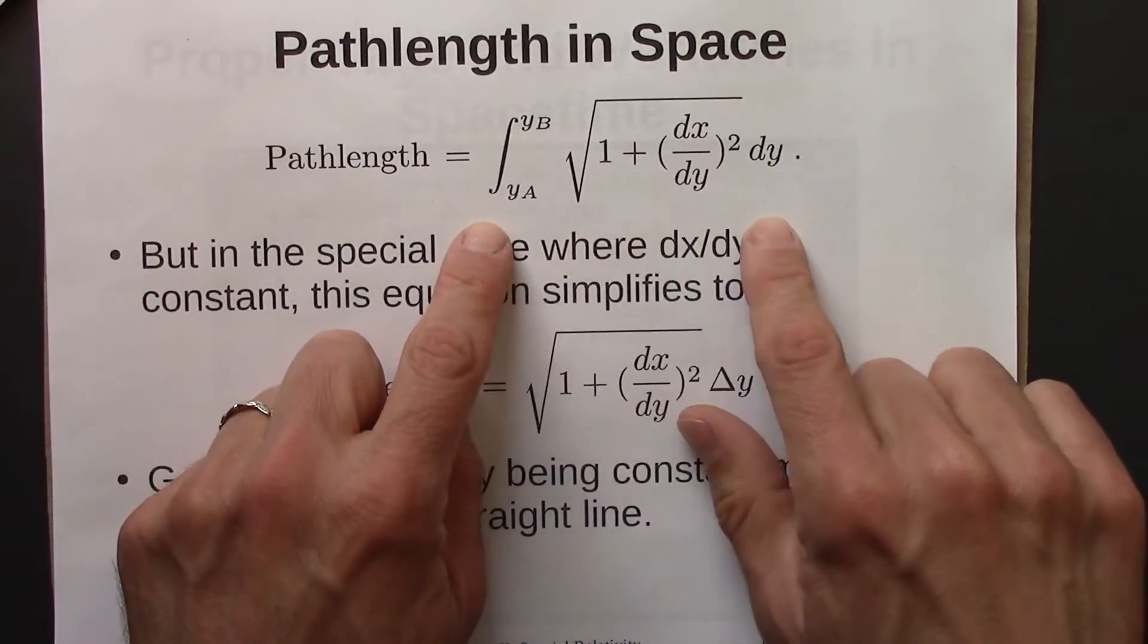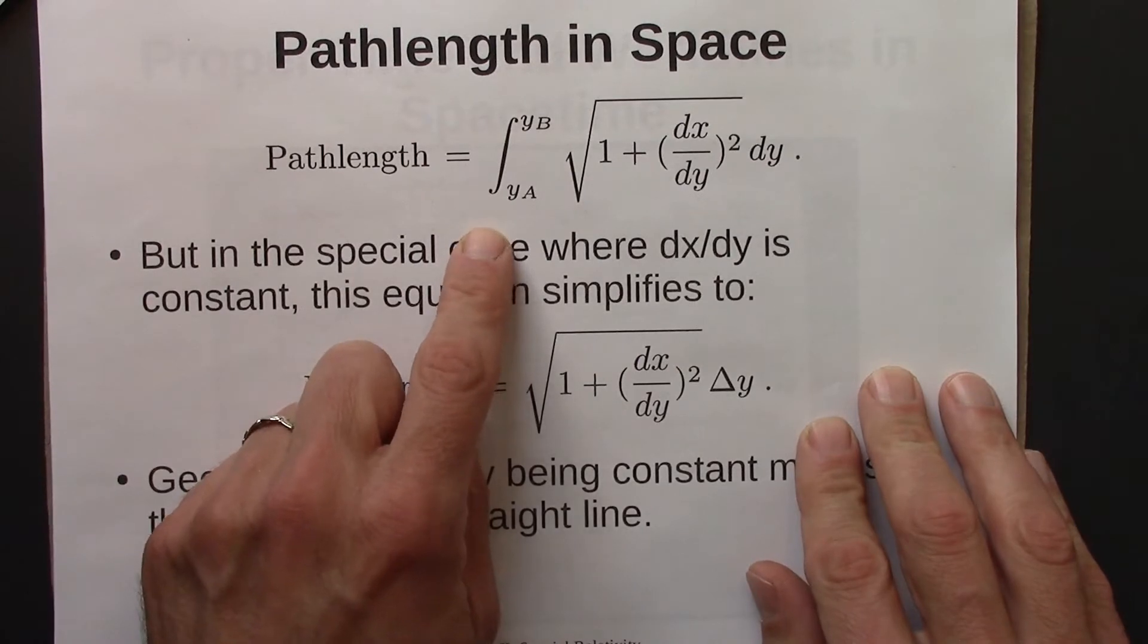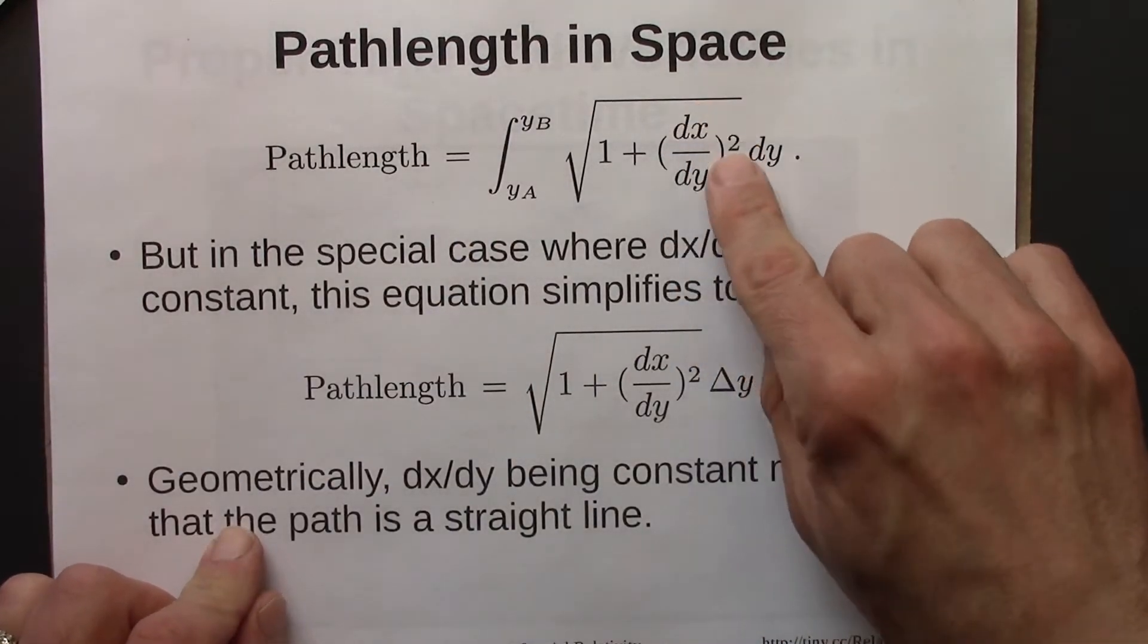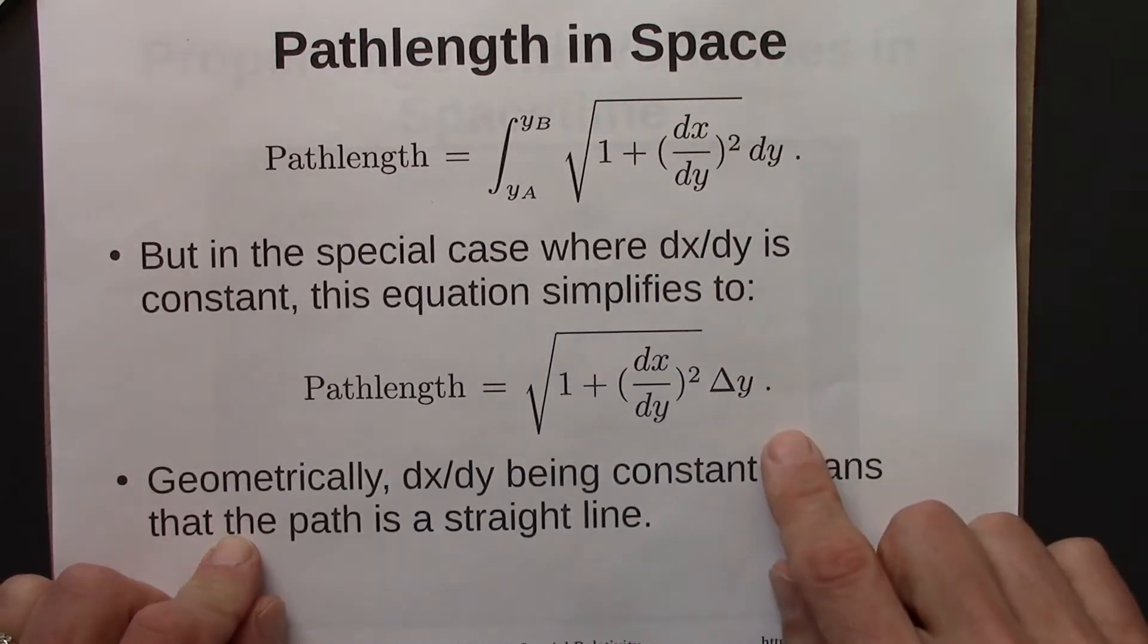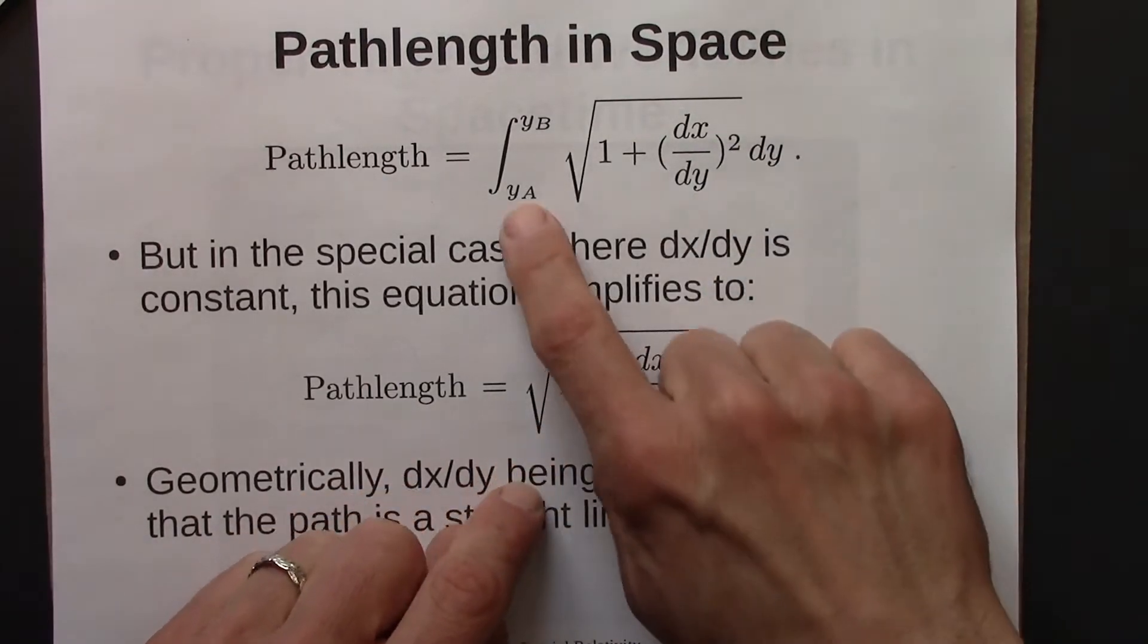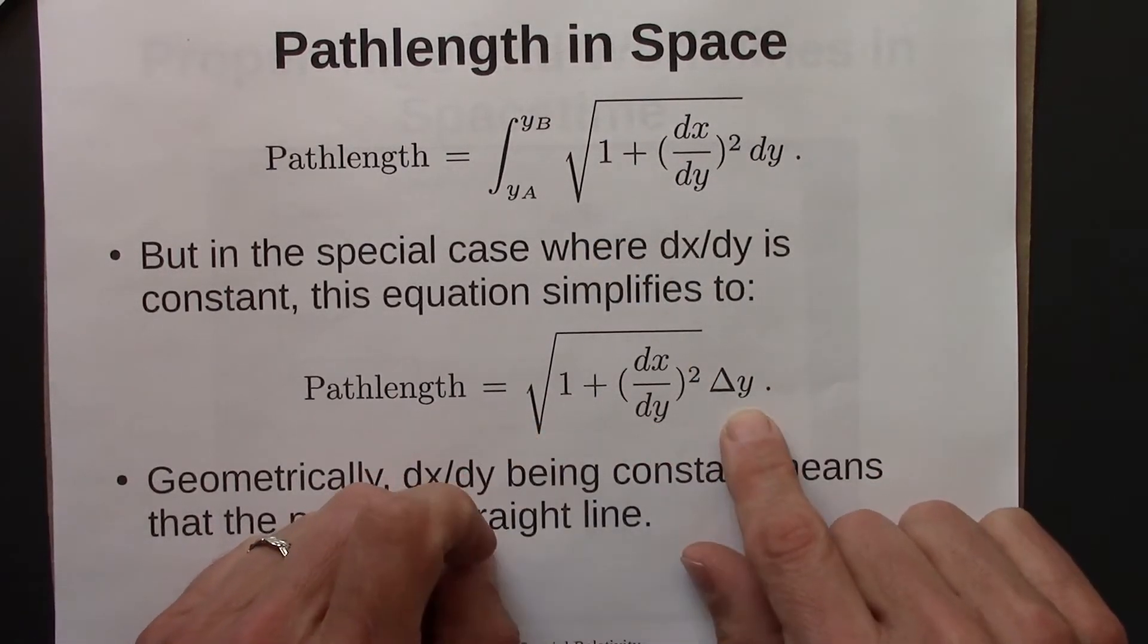It's expressed as a definite integral from the starting y to the ending y. But in the special case where this is constant, dy over dx, then this equation simplifies considerably. We don't need this fancy calculus, and we can just multiply directly. It's this length times that.